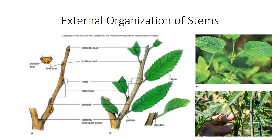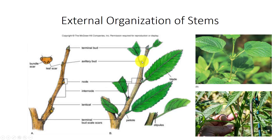A shoot is a stem with included leaves. Leaves are attached at nodes, and internodes are the region between the nodes. The stem area just above the point where the leaf attaches is the leaf axil. It contains an axillary bud — a miniature shoot with a dormant apical meristem and several young leaves. Although the axil of every leaf contains a bud, only a few buds ever develop into a branch; others remain dormant or produce flowers.